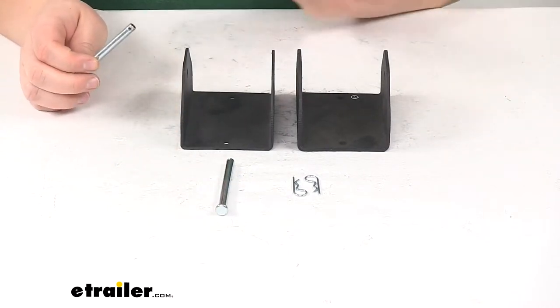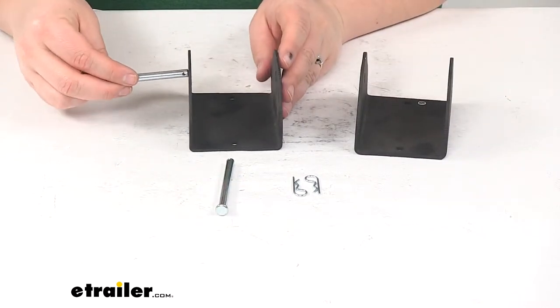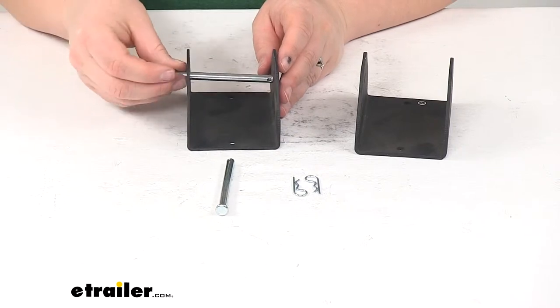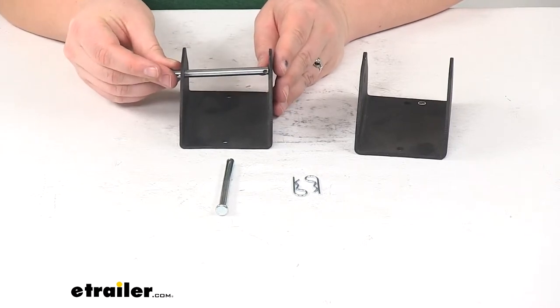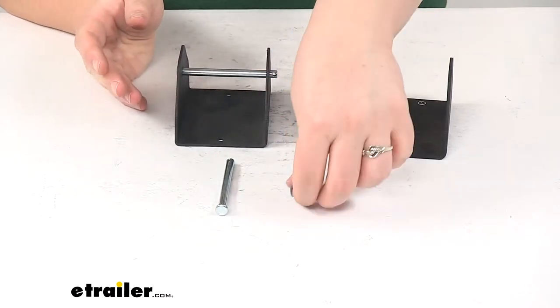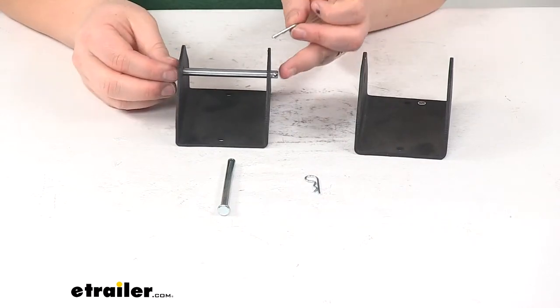We'll take our clevis pin, put it through the bracket, then it'll go through our steps and back out, and then we can secure that in place with our cotter pin.